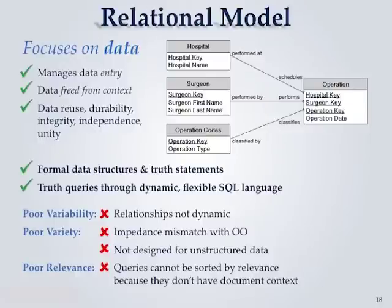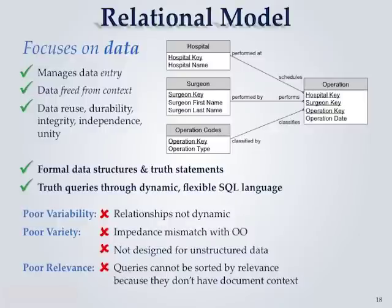The relational model focuses on data and isn't really good at variability, variety, or relevance. The dimensional model is really good for flexibility in querying operational data. You take the data and shred it into flexible structures — you can create query views you didn't anticipate when you started, but there's a lot of upfront cost: a lot of design, a lot of thinking, a lot of generality to make that happen.